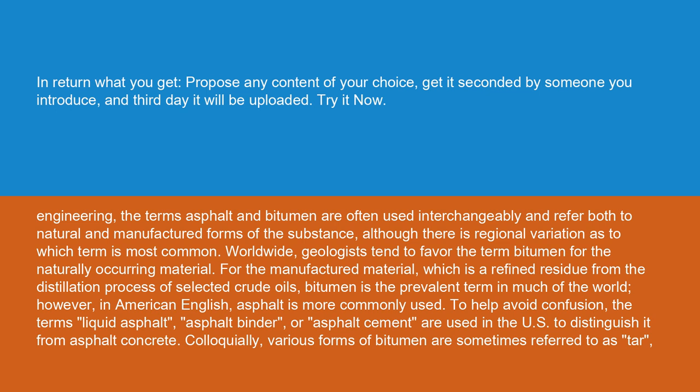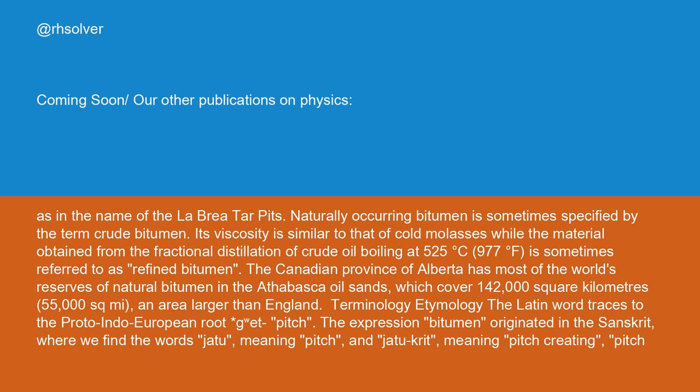Colloquially, various forms of bitumen are sometimes referred to as tar, as in the name of the La Brea tar pits. Naturally occurring bitumen is sometimes specified by the term crude bitumen. Its viscosity is similar to that of cold molasses, while the material obtained from the fractional distillation of crude oil boiling at 525°C (977°F) is sometimes referred to as refined bitumen. The Canadian province of Alberta has most of the world's reserves of natural bitumen in the Athabasca oil sands, which cover 142,000 square kilometers — an area larger than England.